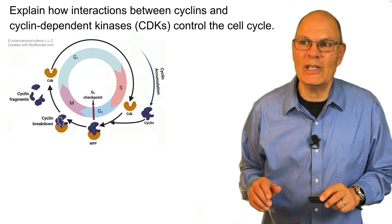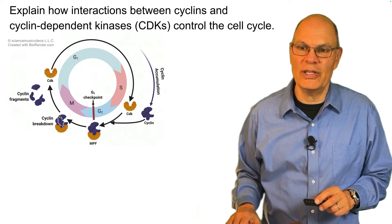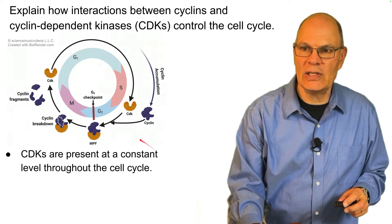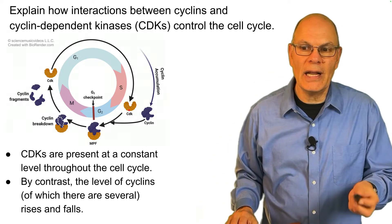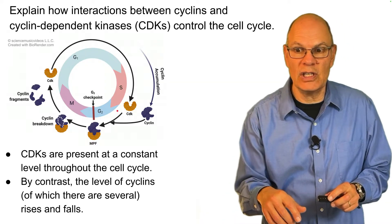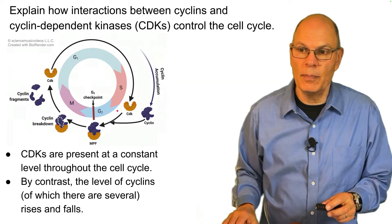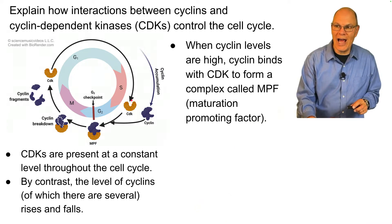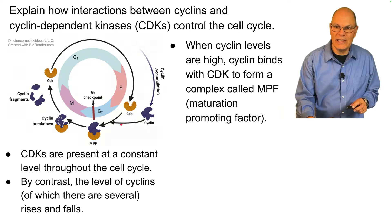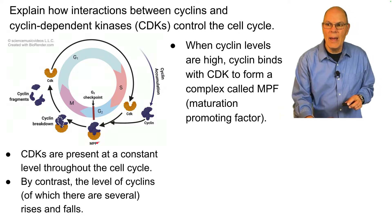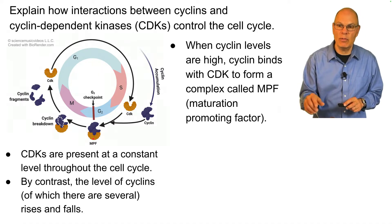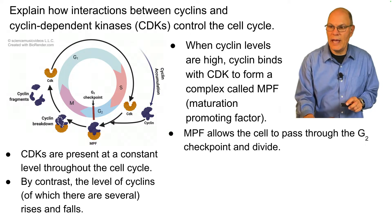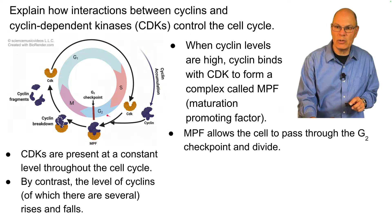CDKs are present at a constant level throughout the cell cycle. By contrast, the level of cyclins rises and falls. When cyclin levels are high, the cyclins bind with CDKs to form a complex called maturation promoting factor — a good way to remember that is to think of it as mitosis promoting factor. Once you have MPF, that allows the cell to pass through the G2 checkpoint and actually divide.